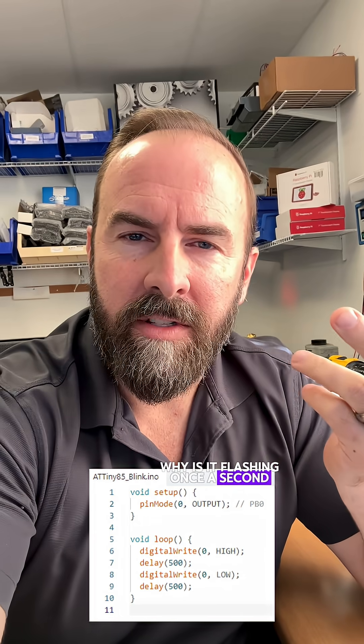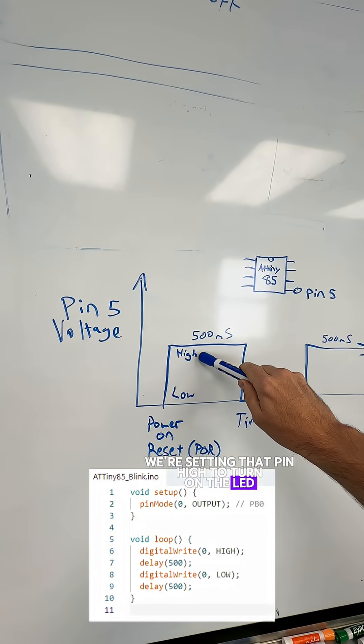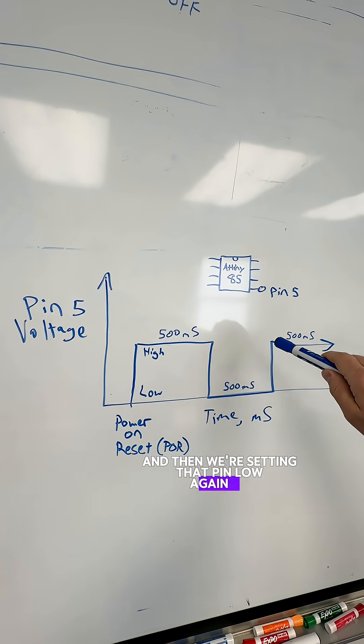Why is it flashing once a second? Because in our code here, we're setting that pin high to turn on the LED. We're waiting 500 milliseconds, which is half a second, and then we're setting that pin low again to shut off the LED. We're waiting 500 more milliseconds, and we're looping that forever.